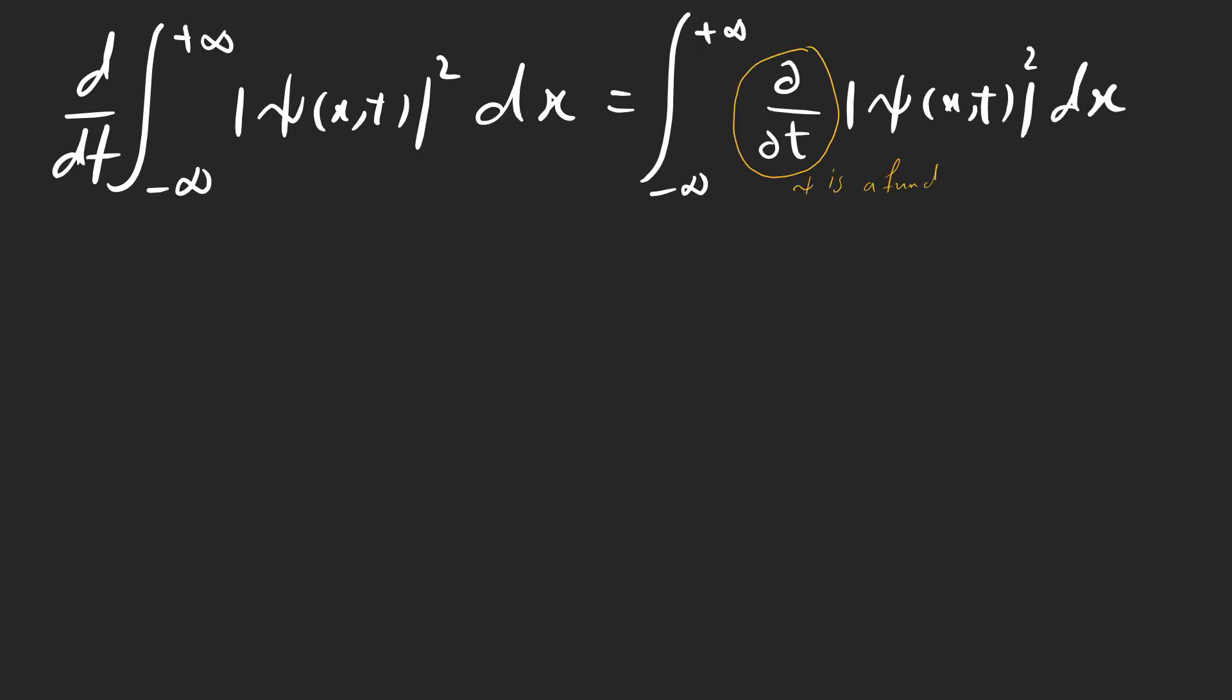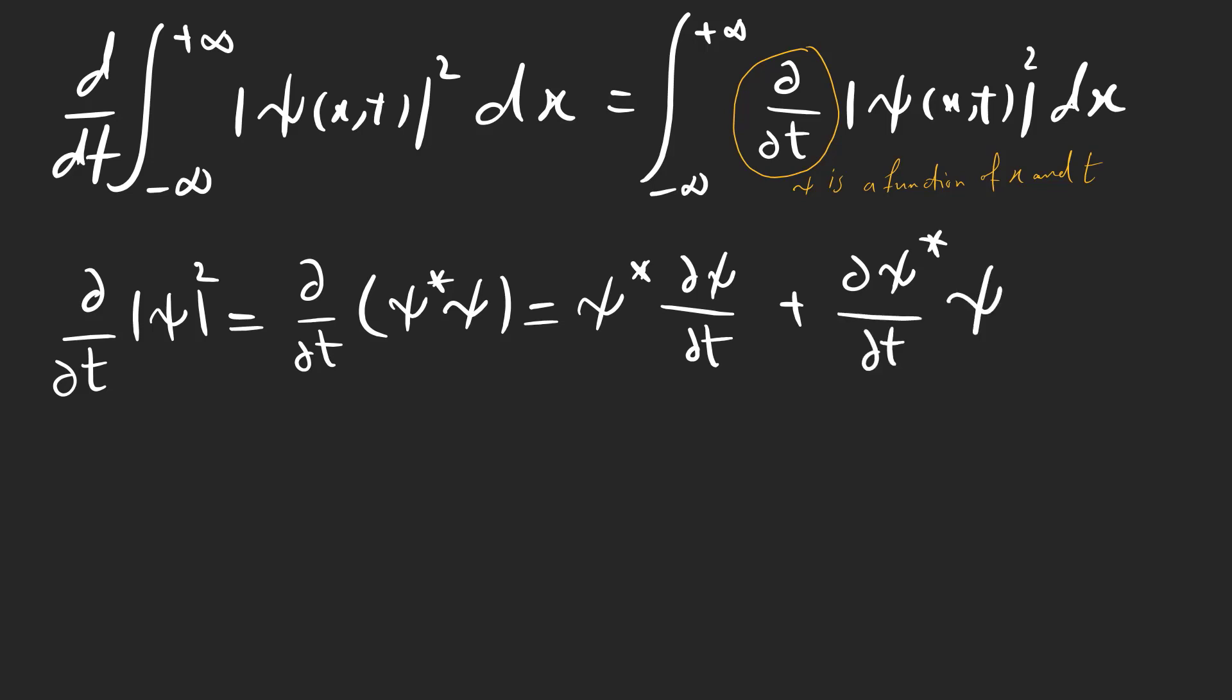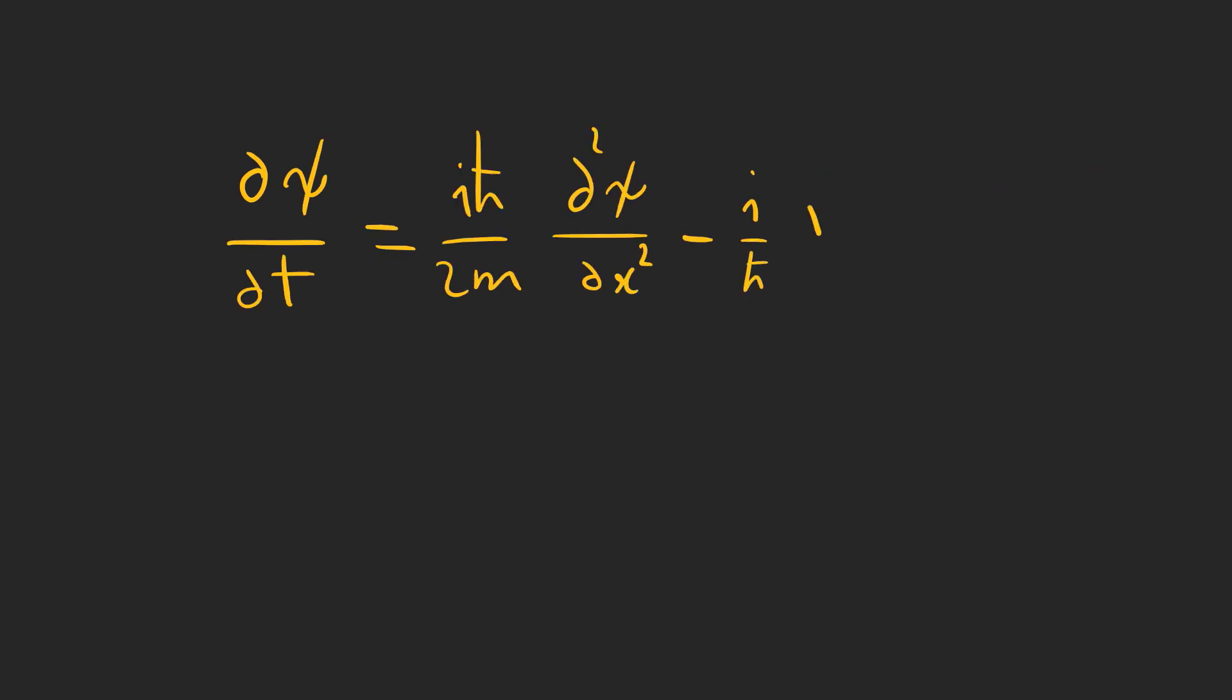Let's prove this. We need to calculate the time evolution of the normalization integral to see if it is preserved or not. Note that psi is a function of x and t, and to calculate the time evolution of psi, we need to use partial derivatives with respect to t. The partial derivative of psi squared can be calculated as follows. Psi star is the conjugate of psi, and the partial derivative yields this formula. Now, we use the Schrödinger's equation and substitute these formulas in the previous one.